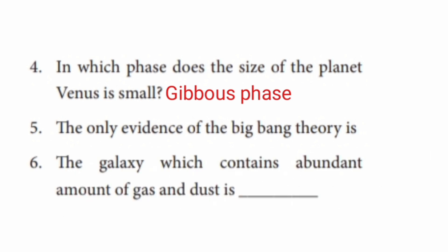Question 6: The galaxy which contains an abundant amount of gas and dust is Irregular galaxies.